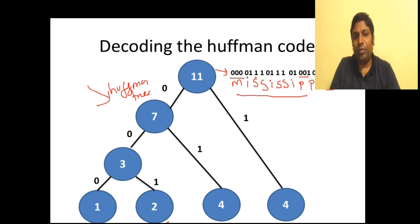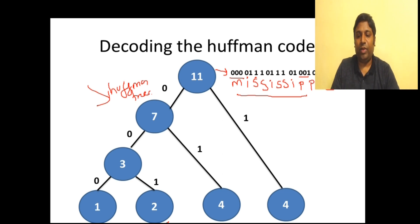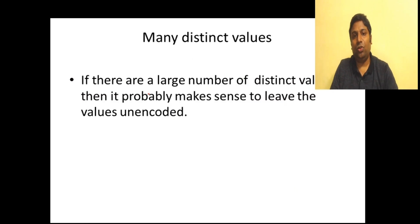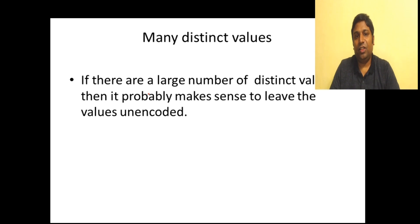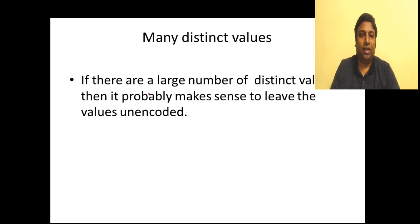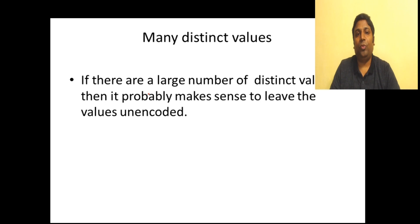That is how you compress and decompress data using Huffman code. These are some of the compression techniques in databases. If you have many distinct values in your columns and these values are totally unrelated to each other, then it's better to leave it without encoding. Hope you all have understood all the compression techniques. Thank you.